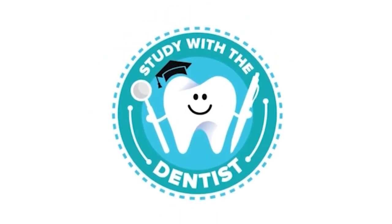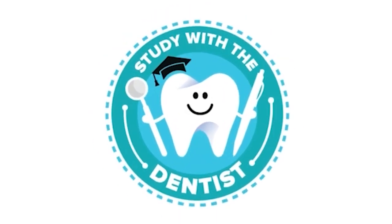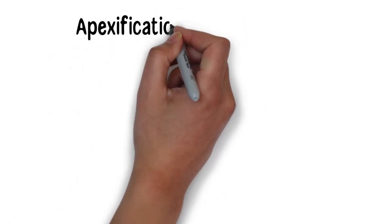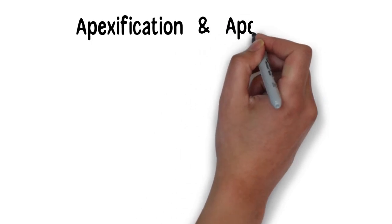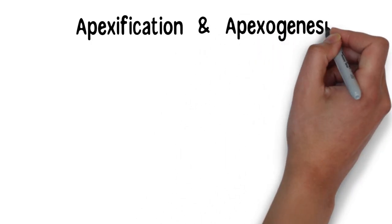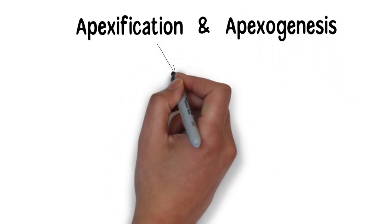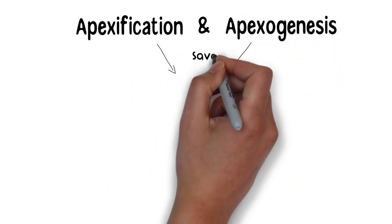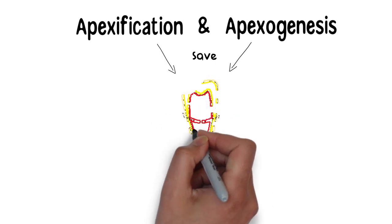Hello and welcome everyone. Apexification and Apexogenesis are two procedures that can help to save an underdeveloped tooth with a pulpal exposure from getting extracted.